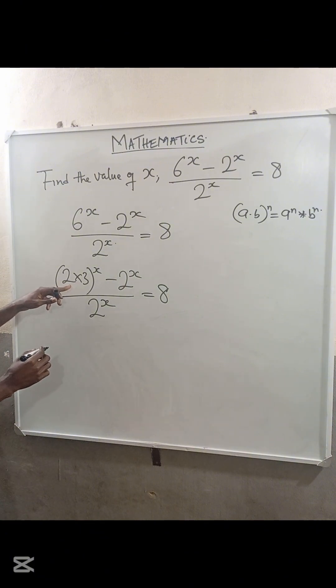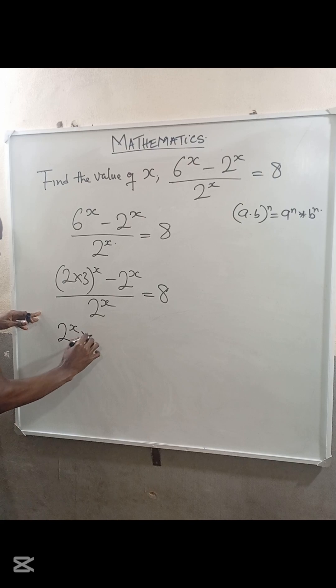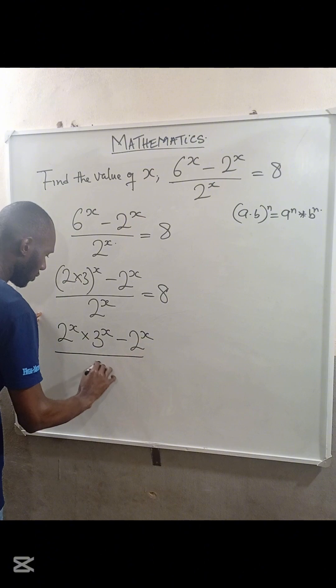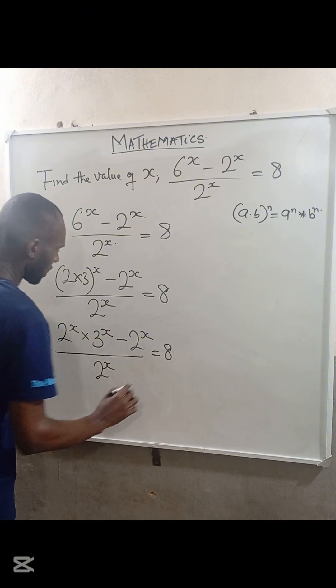Therefore, at this point, the expression becomes (2^x × 3^x - 2^x) / 2^x = 8.